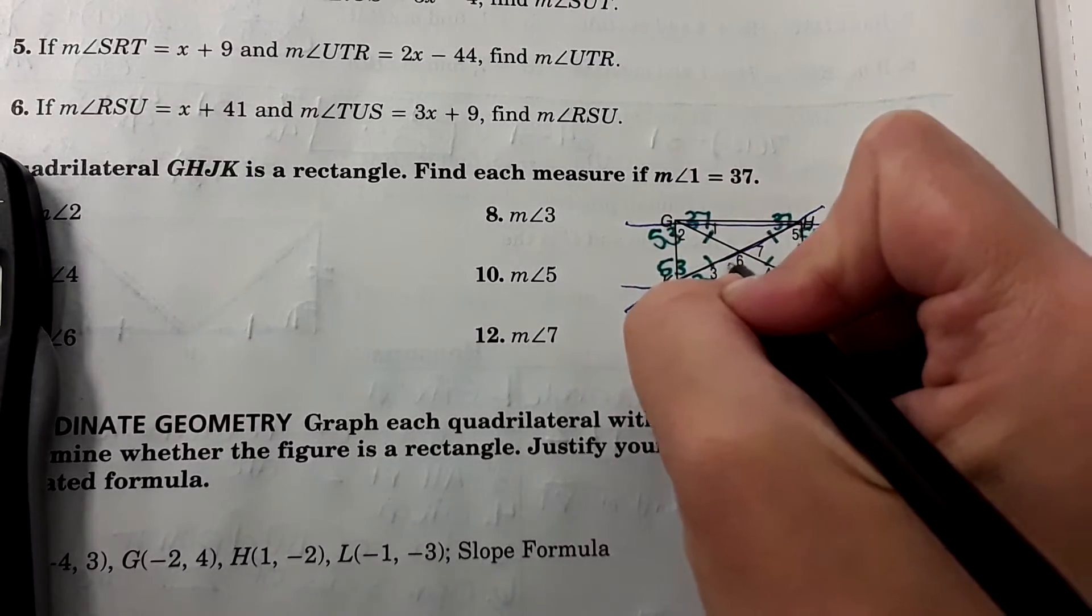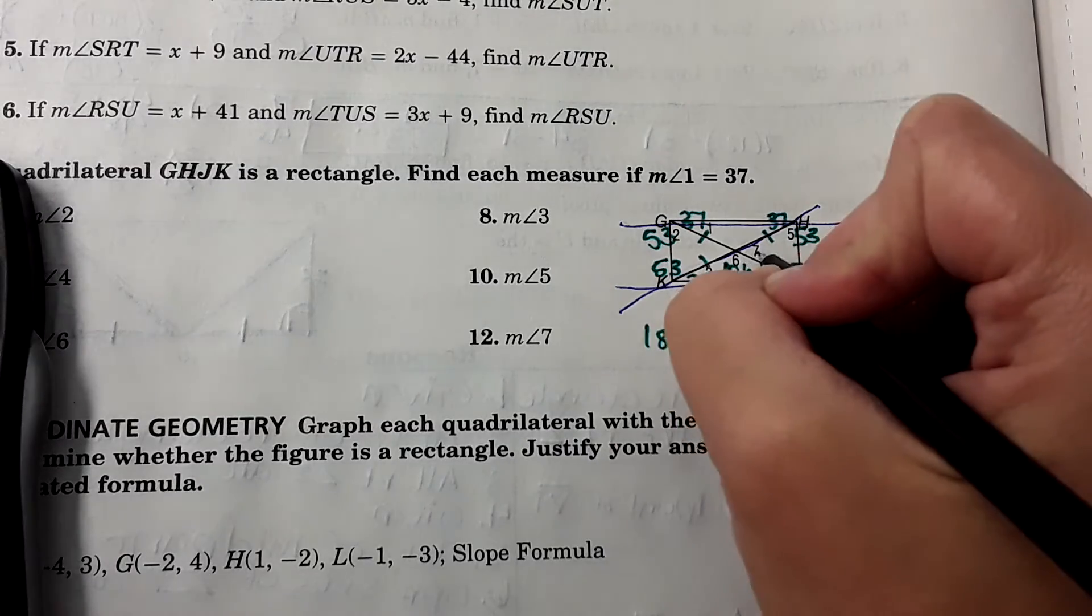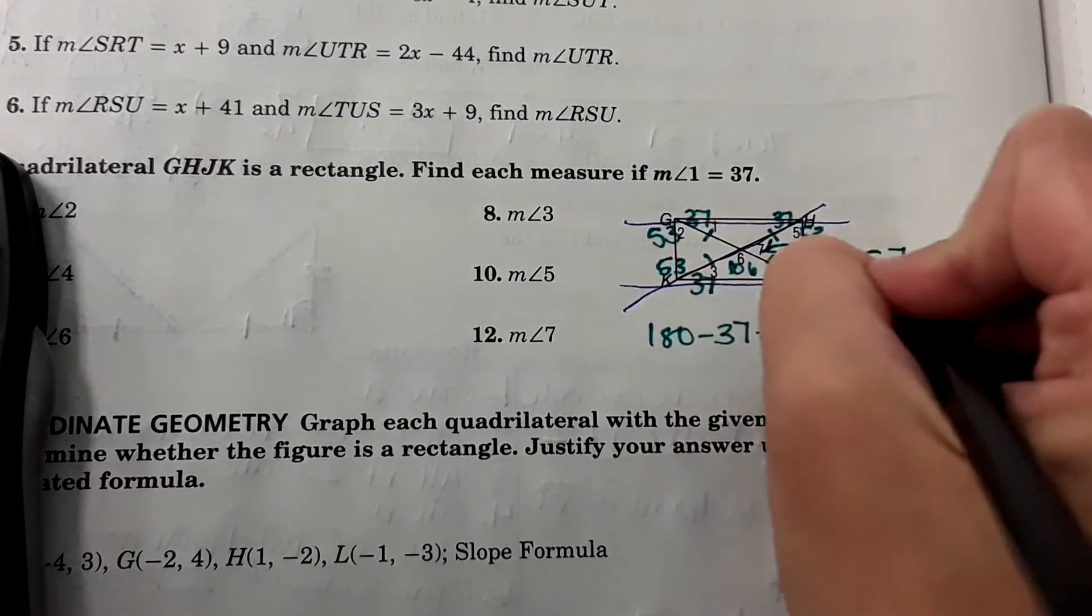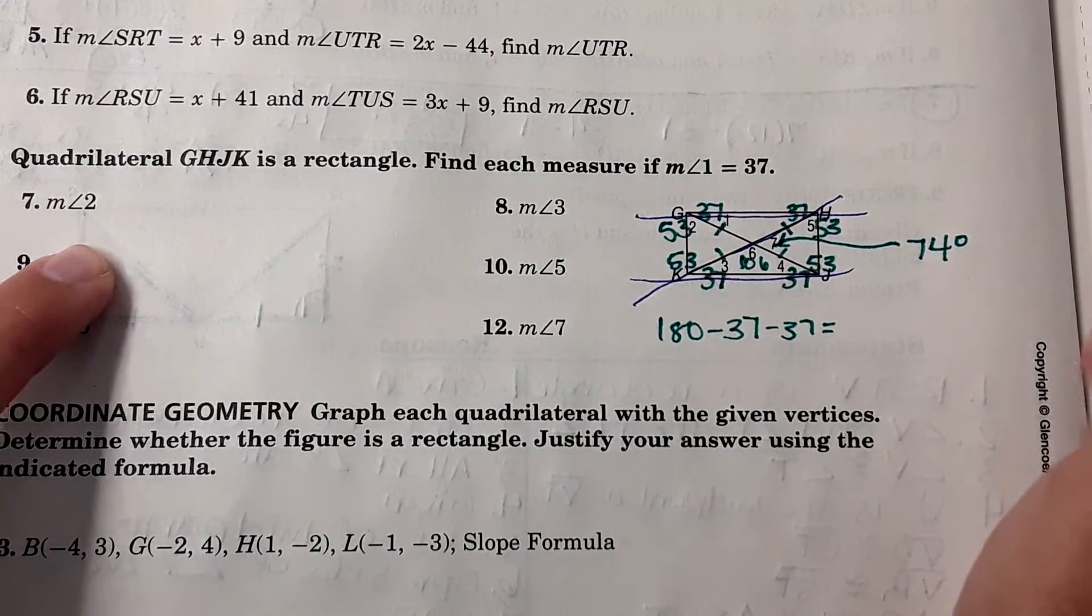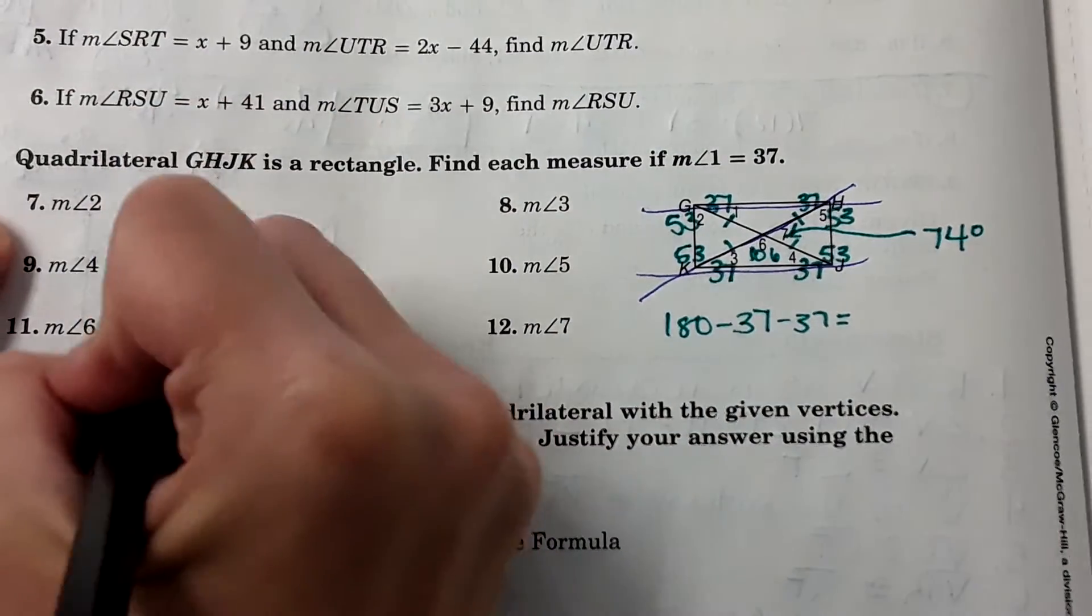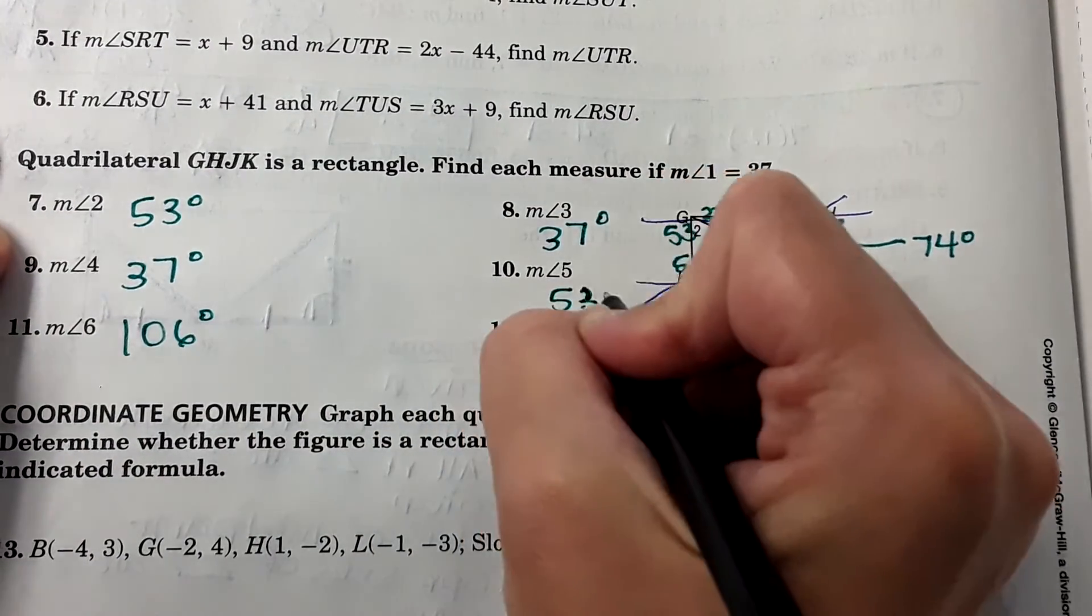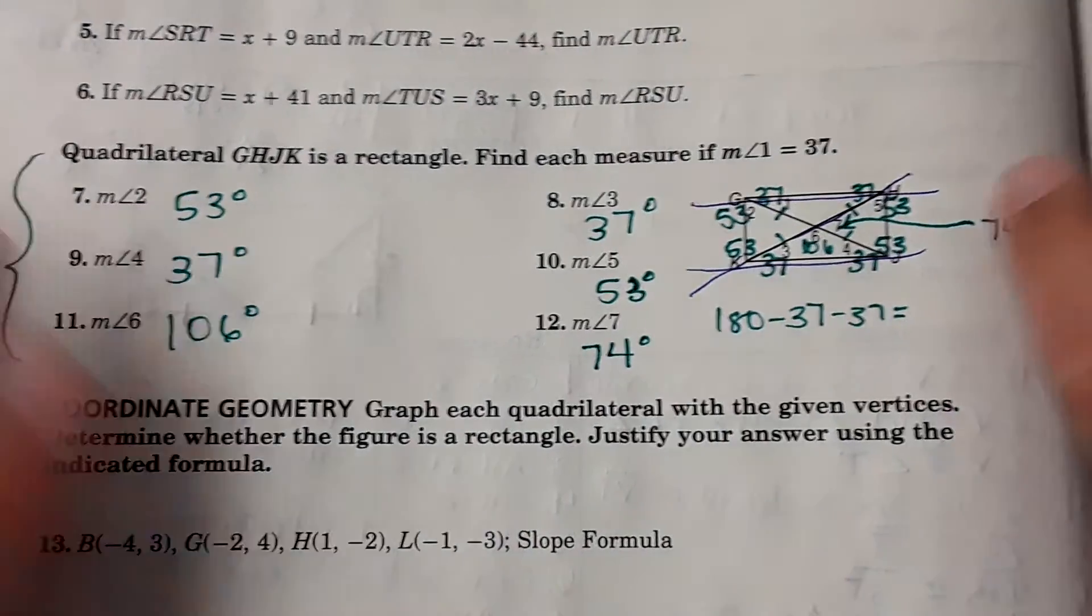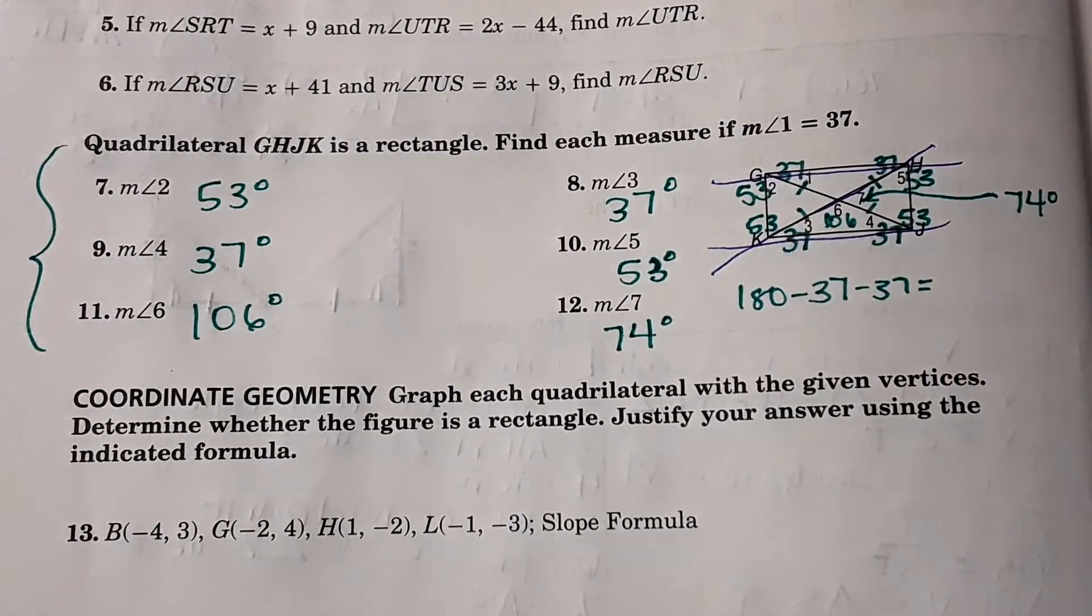So angle 6 is 106 degrees. And angle 7 would be its supplement at 74 degrees. I'm trying to fit it all in here. 74 degrees. So now you can plug in the answers here. This is 53 degrees, 37 degrees, 106 degrees, 37 degrees, 53 degrees, and 74 degrees. And as you just heard, my planning period is almost over. So that is going to be it. Now you can start your homework on Schoology.